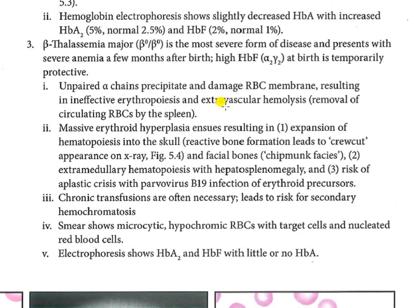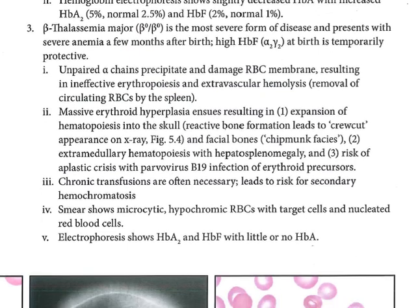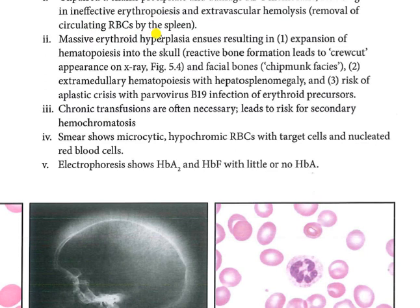This is very severe disease. The RBCs are severely deficient in the body. There is massive erythroid hyperplasia, resulting in expansion of hematopoiesis into the skull and facial bones. The bone marrow becomes very active. Facial bones become prominent because the bones expand due to this extra hematopoietic activity.